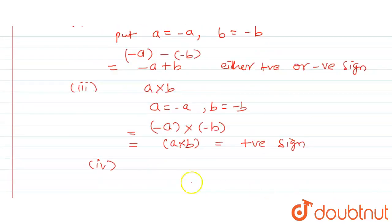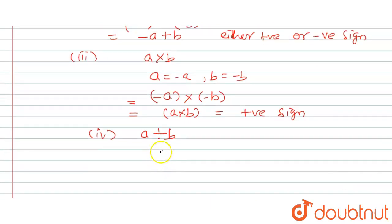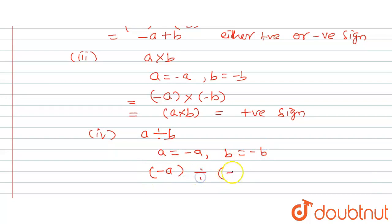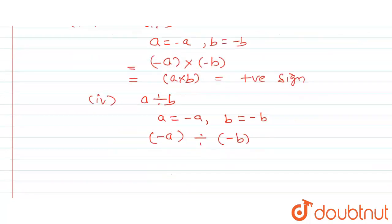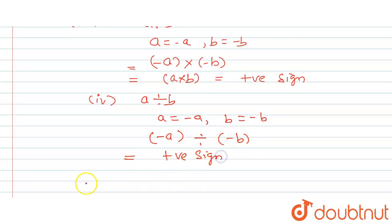For the fourth part, a divided by b: since a and b are two negative integers, this becomes minus a divided by minus b. As we know, when two negative integers are divided by each other, the resultant quotient is always positive. So the sign will be positive.